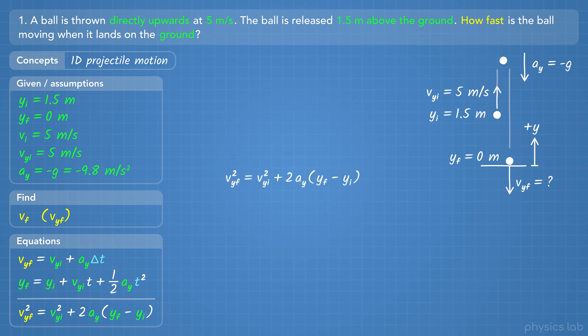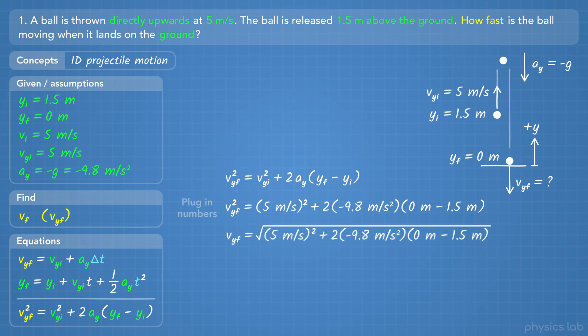First, let's use this equation to find the final speed of the ball. We plug in 5 m per second for the initial y velocity, negative 9.8 m per second squared for the acceleration, 0 m for the final y position, and 1.5 m for the initial y position. We can take the square root of both sides, plug that into our calculator, and we get 7.38 m per second for the final speed of the ball when y equals 0 meters.